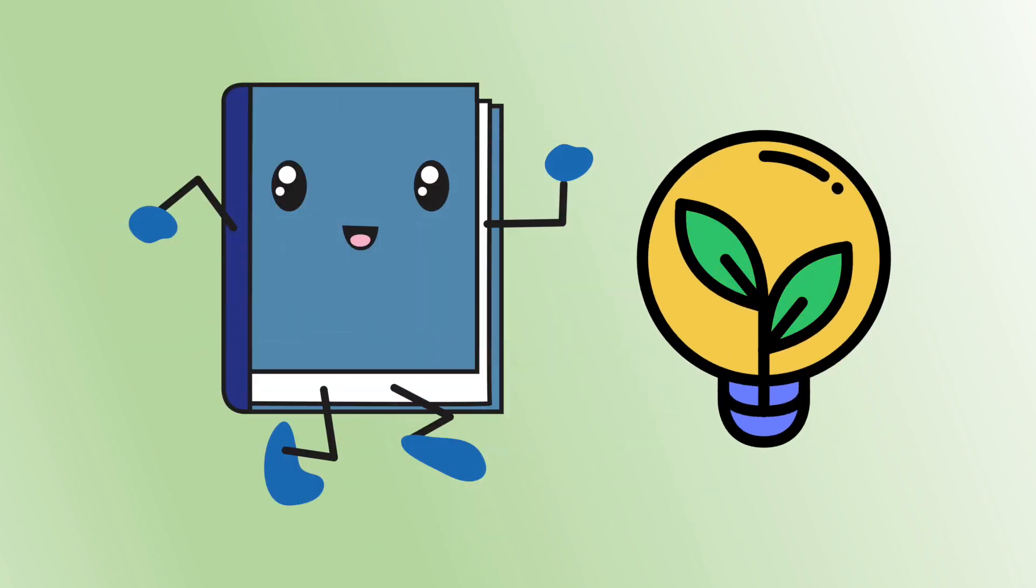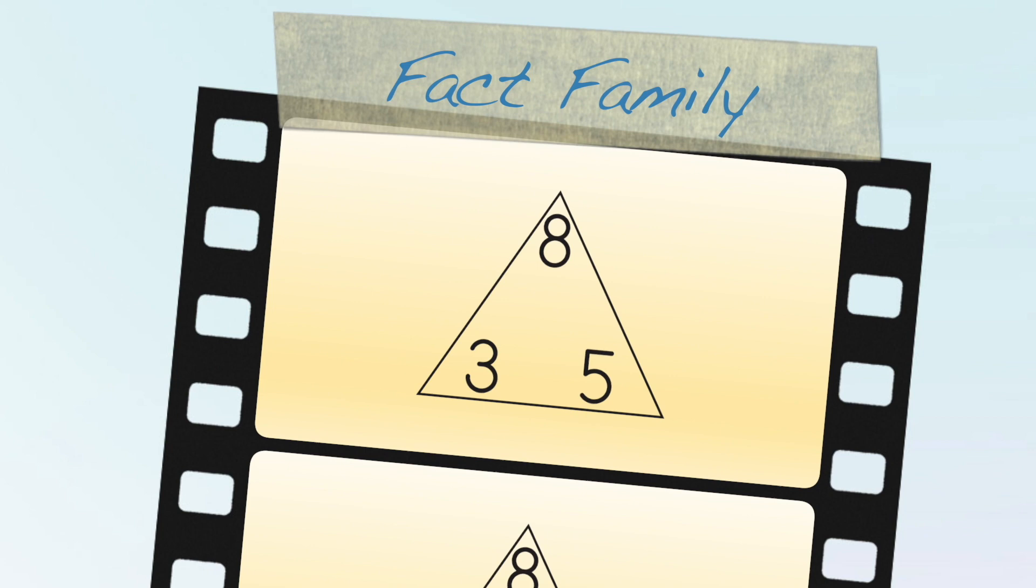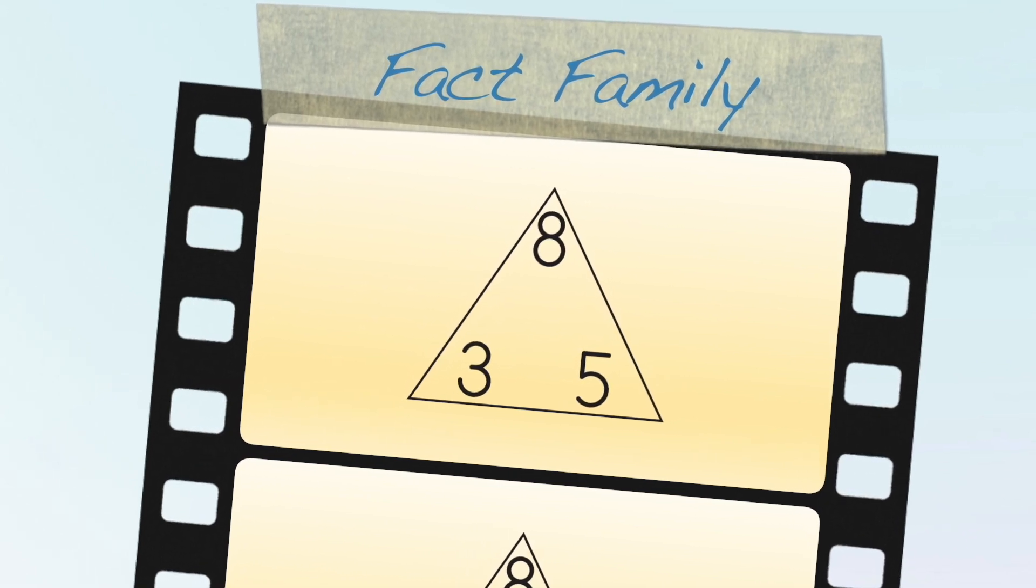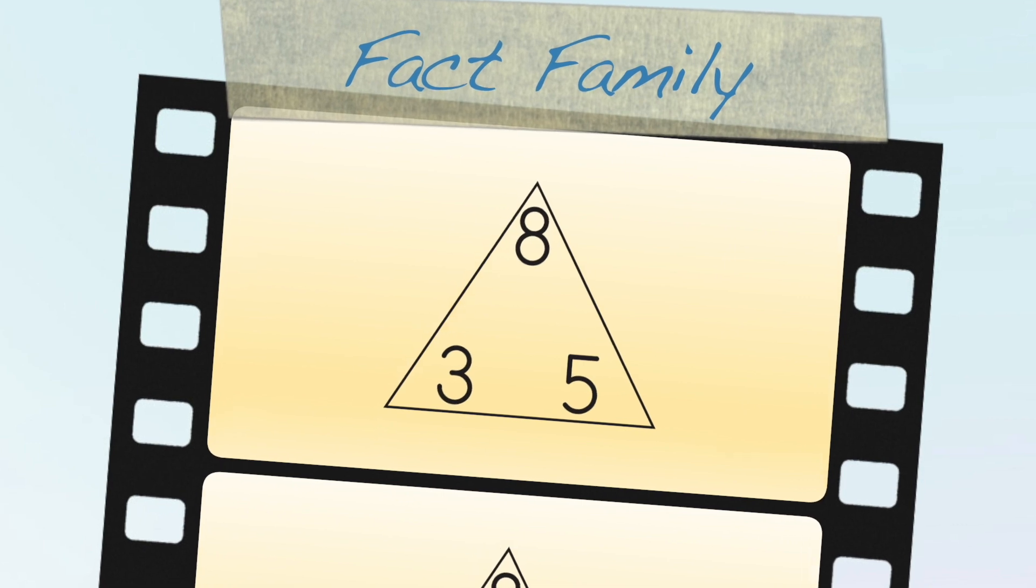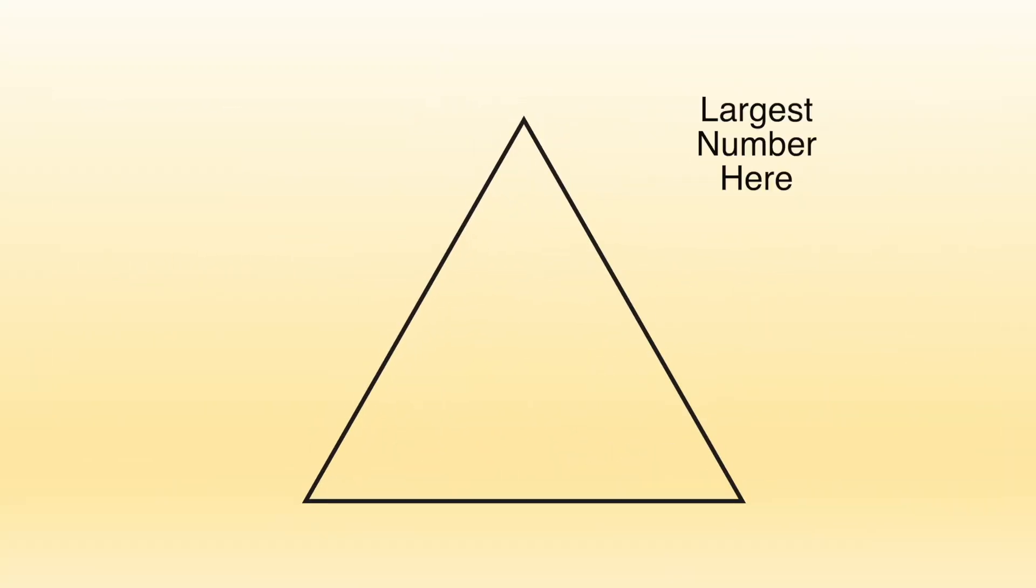Baxter knows that a fact family triangle is a big help for listing math facts. A fact family is made up of three numbers that go together to make addition and subtraction facts. You put the largest number at the top of the triangle, and the other numbers go to the bottom.